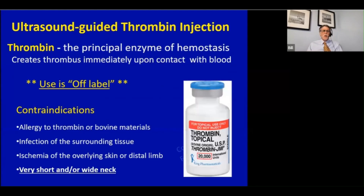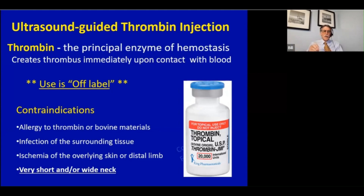Because of the time and difficulty of compression, one of the alternatives is ultrasound-guided thrombin injection. Thrombin is the principal enzyme of hemostasis - it creates thrombus immediately upon contact with blood. Now, this is an off-label use; if you look at the bottle of thrombin it says do not inject. Nonetheless, this has actually become the standard and most widely used treatment option. We wouldn't want to do that if the patient is allergic to thrombin or bovine materials, if they have an infection or ischemia of the overlying skin, or if there's a very short or wide neck - which increases the risk of that thrombin getting out into the native circulation.